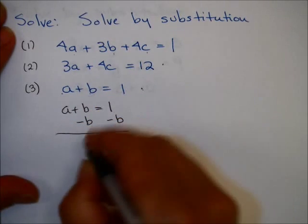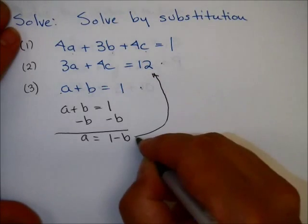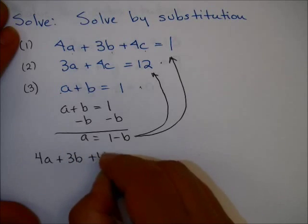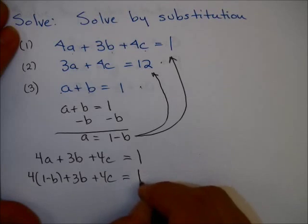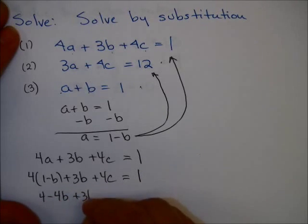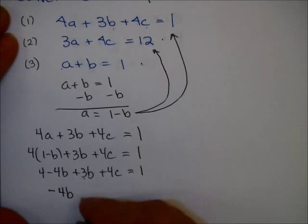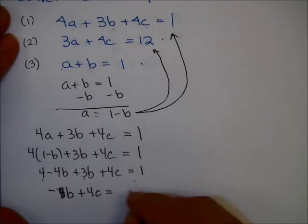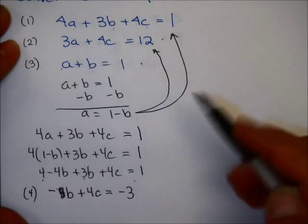By subtracting B from both sides, I end up with A equals 1 minus B. Now I am going to substitute this value for A into equation 2 and into equation 1. So equation 1 becomes 4A plus 3B plus 4C equals 1. That's 4 times (1 minus B) plus 3B plus 4C equals 1. That's 4 minus 4B plus 3B plus 4C equals 1. This ends up as minus B plus 4C, then subtracting 4 from each side gives me minus 3. I'm going to call this equation 4.